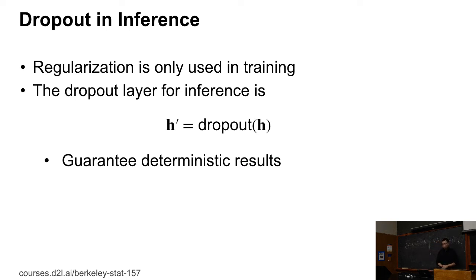Dropout is a regularization. During inference, we shouldn't apply regularization because it's only useful to limit the choice of the weight during training. During inference, dropout just returns the input value. So during inference and during training, we have different behaviors.